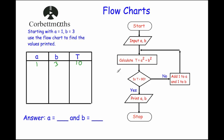Is t larger than 90? No, so we go right and add 1 to a and 1 to b, giving us 2 and 4. Calculate t = a² + b² again: 4 + 16 = 20. Still not larger than 90, so add 1 again to get 3 and 5. Calculate t: 3² + 5² = 9 + 25 = 34. Not larger than 90, so add 1 again to get 4 and 6. Calculate t: 4² + 6² = 16 + 36 = 52.